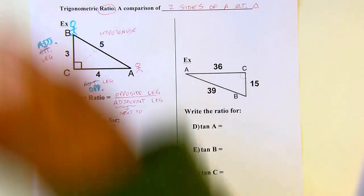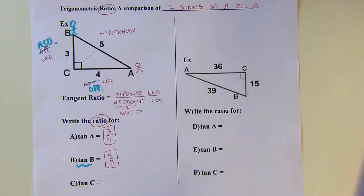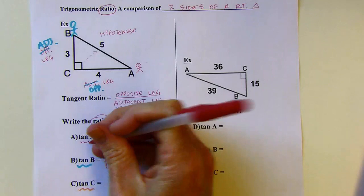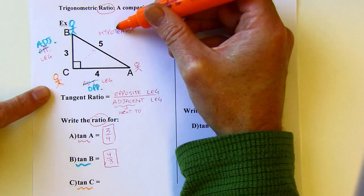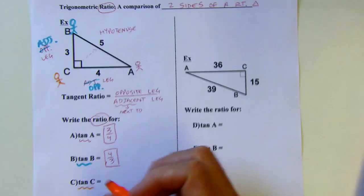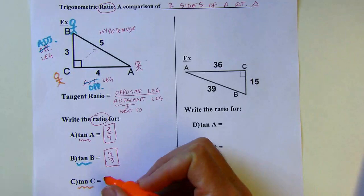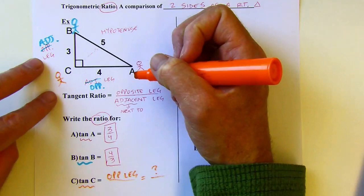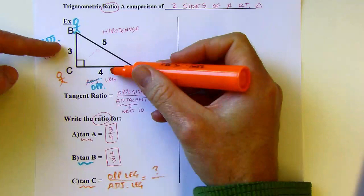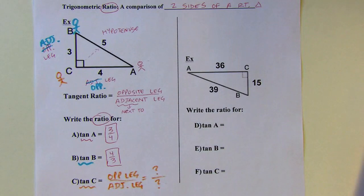Let's look at angle C. If I'm down here at angle C and I'm looking for opposite — remember, it's not just opposite side, it's opposite leg — I don't have a leg opposite where I am here. And when I think of adjacent leg, both of those legs are next to me, so I don't know what to put for that either. So this is going to be undefined, or no solution.